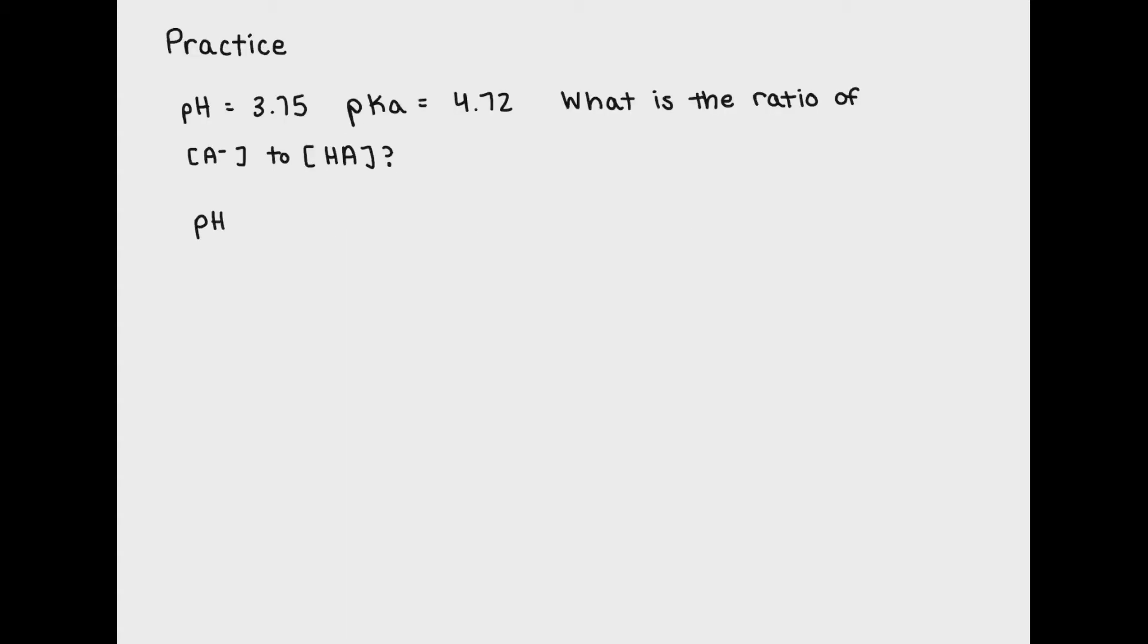Now let's do a practice problem using Henderson-Hasselbalch. Given the pH and the pKa, we're asked to find the ratio of conjugate acid-base pair. If we plug the pH and the pKa into our Henderson-Hasselbalch equation, we can solve for x, which I've labeled as the ratio.